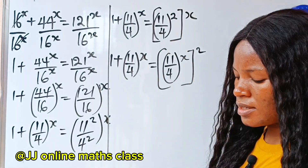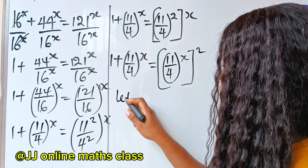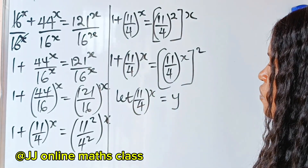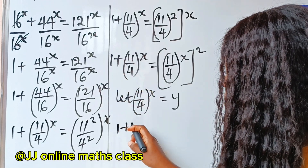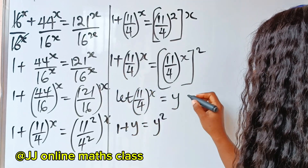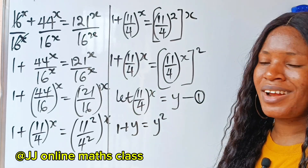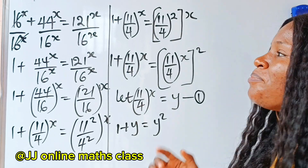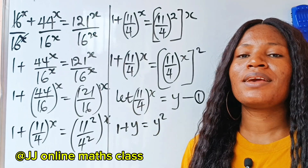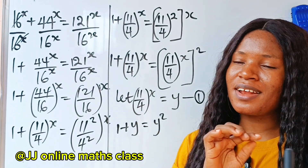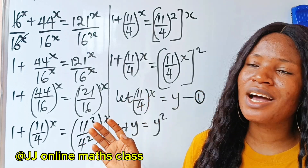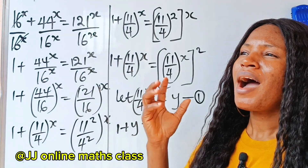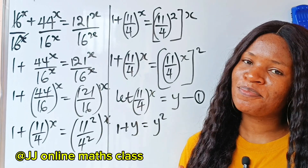Now we have this and this — it is time to simplify. So we are going to say: let 11 divided by 4, to the power of x, be equal to y. If we do that, we have 1 plus y is equal to y squared. So this is a very important equation. We will come back to it to get the value of x. Please subscribe to the channel, turn on your notification bell, and give us a thumbs up if you are enjoying the video.